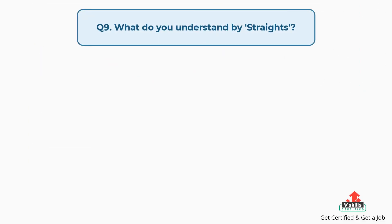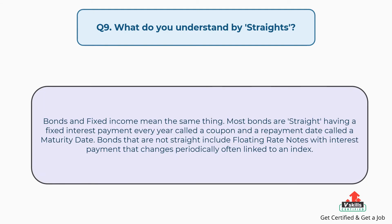Question number nine: what do you understand by straights? The answer is, bonds and fixed income mean the same thing. Most bonds are straight, having a fixed interest payment every year called a coupon and a repayment date called a maturity date. Bonds that are not straight include floating rate notes, with interest payments that change periodically, often linked to an index.